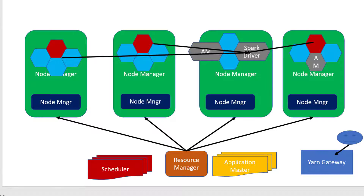Whenever any Spark application gets started, the node manager can provide a container or a space to start the Spark driver. The Spark driver will have a Spark context, and it can request a number of other containers in other node managers, within which it can start the tasks. The Spark context within the Spark driver will coordinate the work happening across a number of containers. Containers started in each worker machine are managed by the node manager, and the work assigned within the container is managed by the Spark driver.